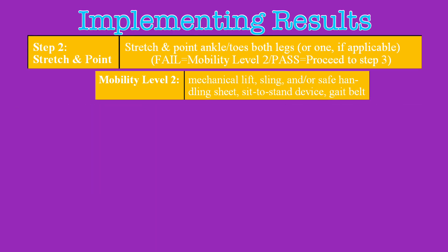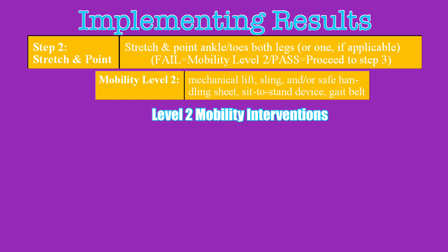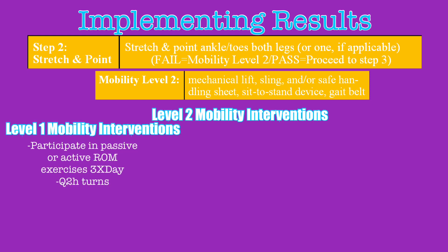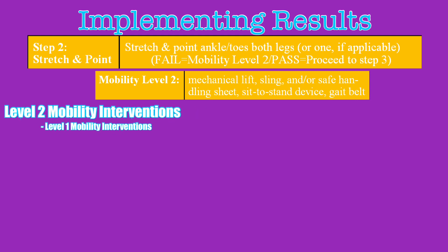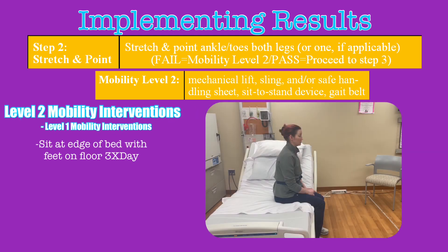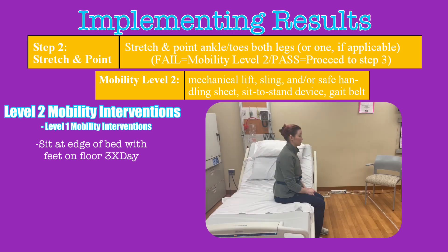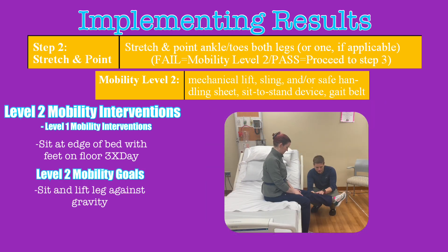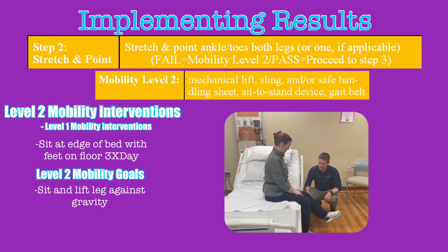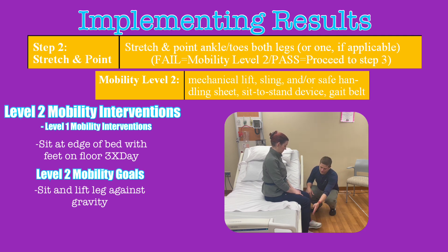Level two mobility patients will require level two mobility interventions. That would include the interventions previously mentioned in level one, but in addition the patient should sit at the edge of the bed with feet on the floor three times per day. This is different than sitting up in a chair or sitting up in bed because it requires the patient to maintain their strength and balance in this position. The primary goal you are trying to achieve in level two is to get the patient to sit upright and move their legs against gravity so that they can get closer to performing the stretch and point action.